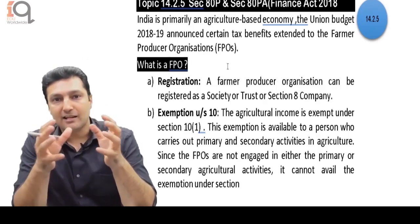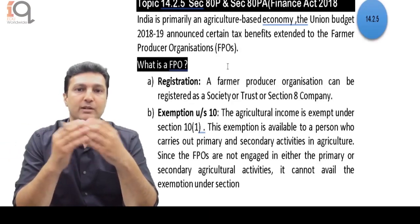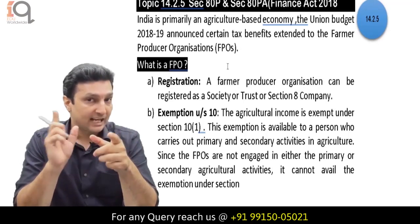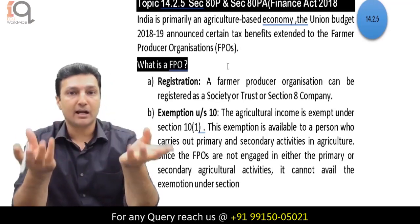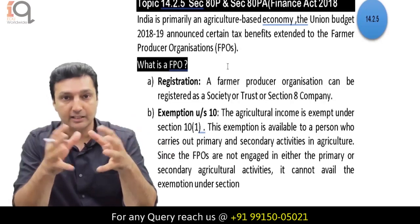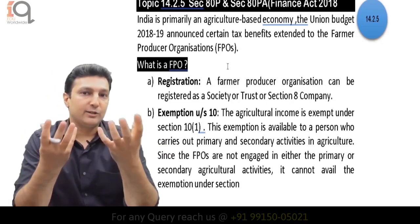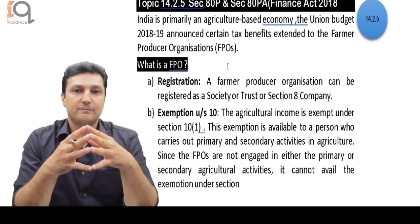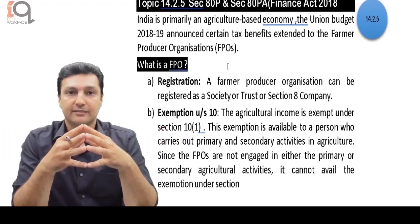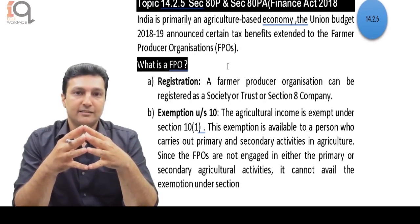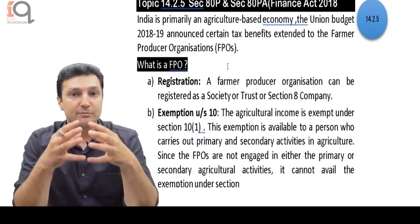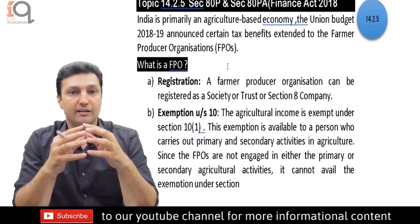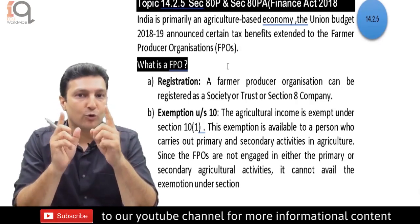What about a society or trust that is giving loans to farmers and earning income — that is not agricultural income. Or maybe they are a marketing society which is not actually growing agricultural produce but just marketing it on behalf of farmers — that is also not agriculture. Some of these entities were eligible for a deduction under ATP, but only if they were formed or incorporated as a cooperative society.